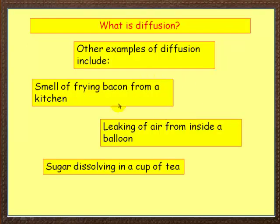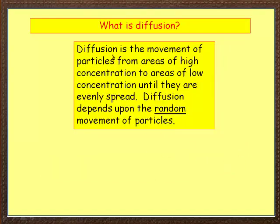Here are some other examples of diffusion. When you're lying in bed in the morning and someone is downstairs frying bacon, the smell wafts up from the kitchen — that's diffusion. If you tie balloons outside your house and come back a few days later they've gone down, because air has leaked out by diffusion. And if you stir sugar into your tea, the sweetness isn't just in one part — it spreads all over. So diffusion is the movement of particles from areas of high concentration to areas of low concentration until they are evenly spread.